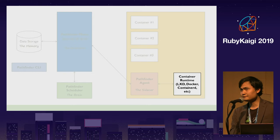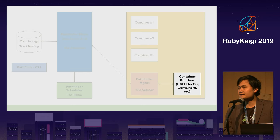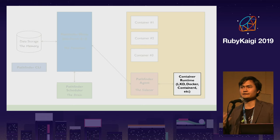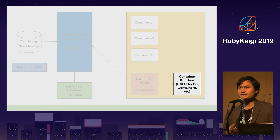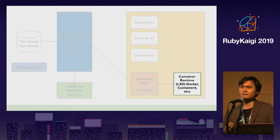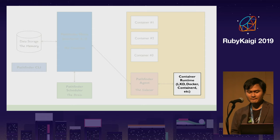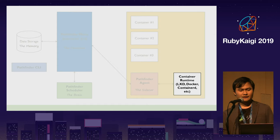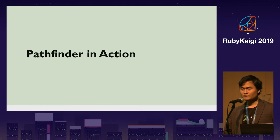In Pathfinder right now, we use Golang for the CLI and agent, and Ruby for the state server — which is built in Rails — and the scheduler. For the runtime, it currently only supports LXD, but it's easy to support another runtime. You could use Docker, containerd, or in Ruby we also have Hakoniwa, which is another container runtime DSL.